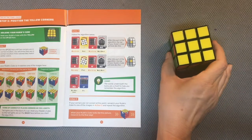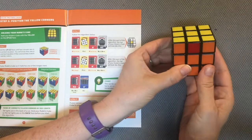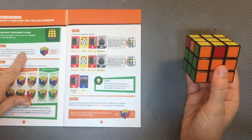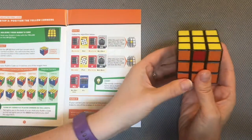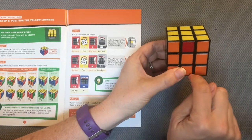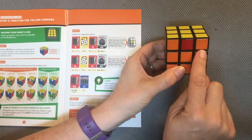Now I need to position my yellow corners. I need to twist the up face until two corners are in the correct location. I noticed as soon as I looked at my orange face, I have those two in the correct location.